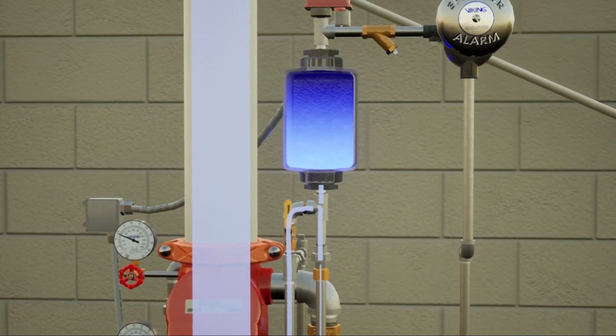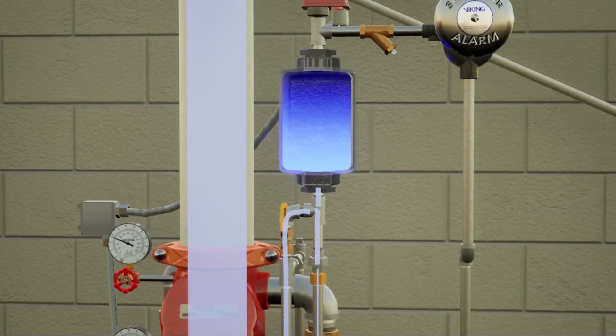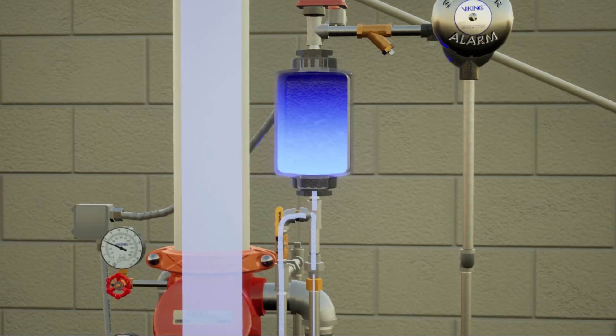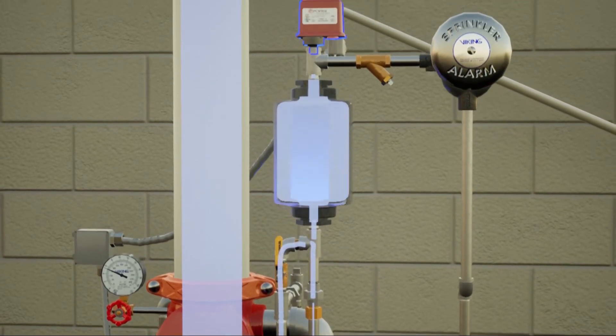During a fire, a consistent flow of water enters the alarm trim and fills the retard chamber faster than the restriction can drain, and the water flow continues through to the alarm devices.